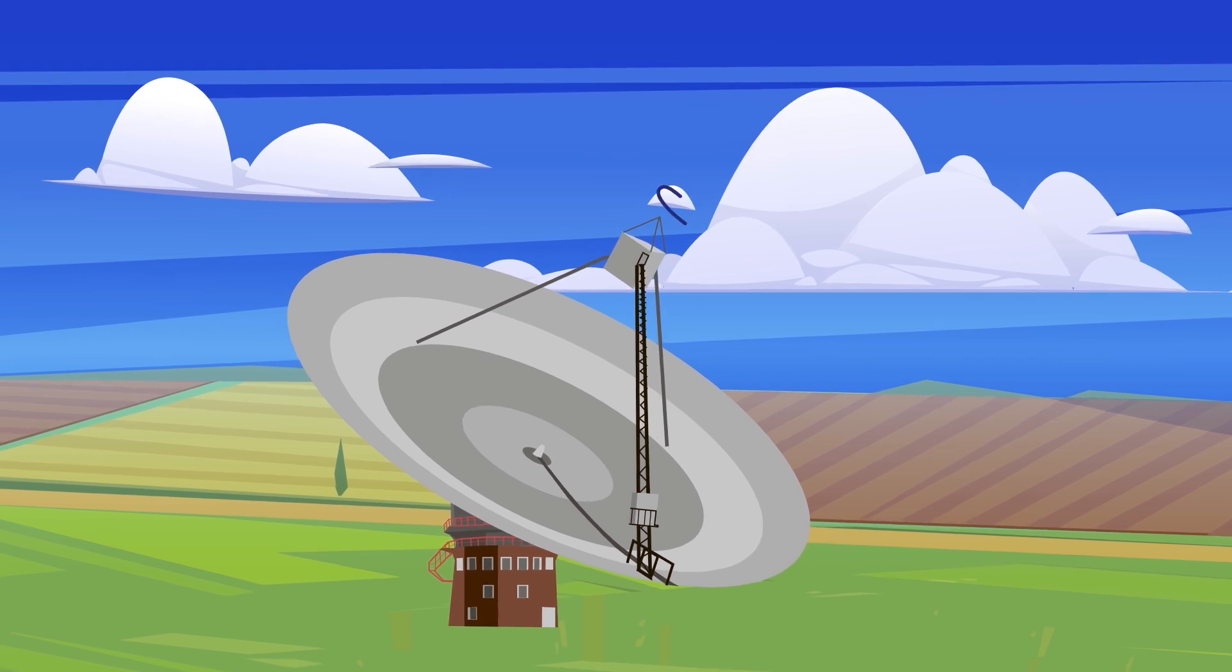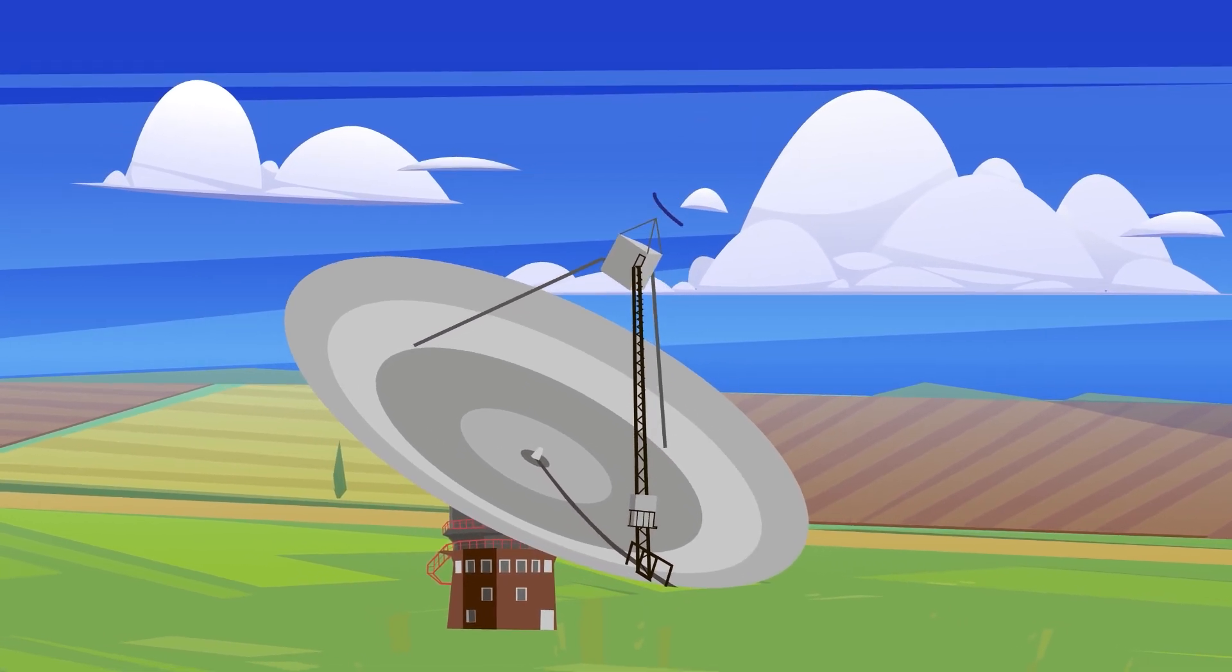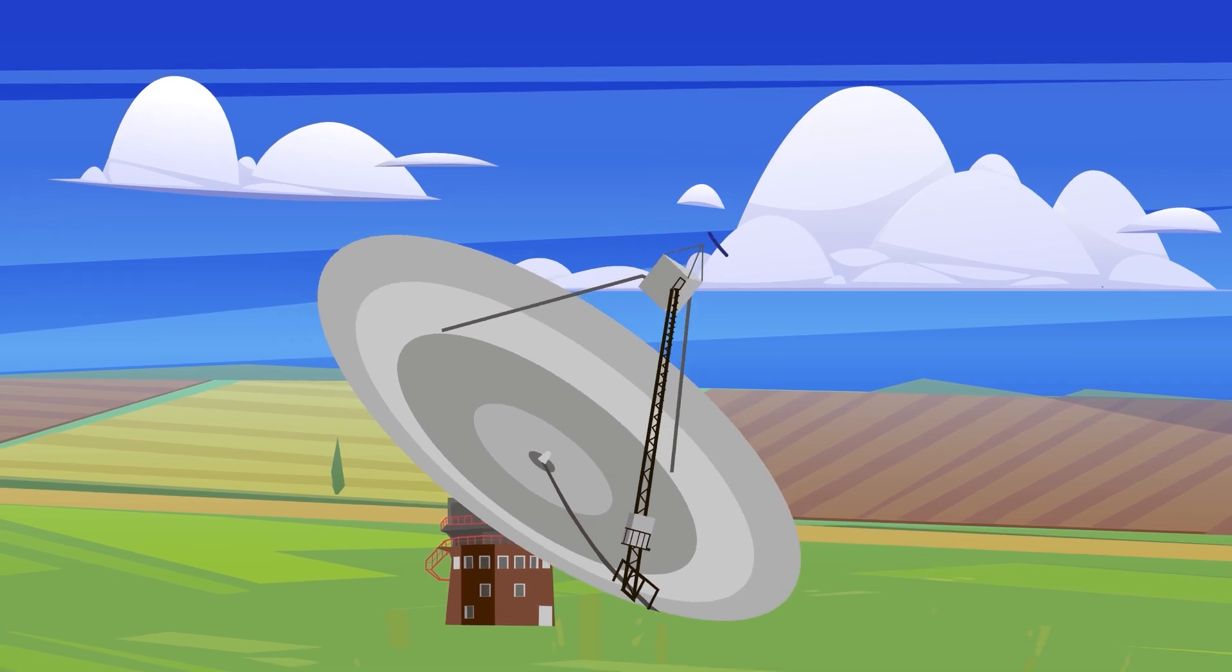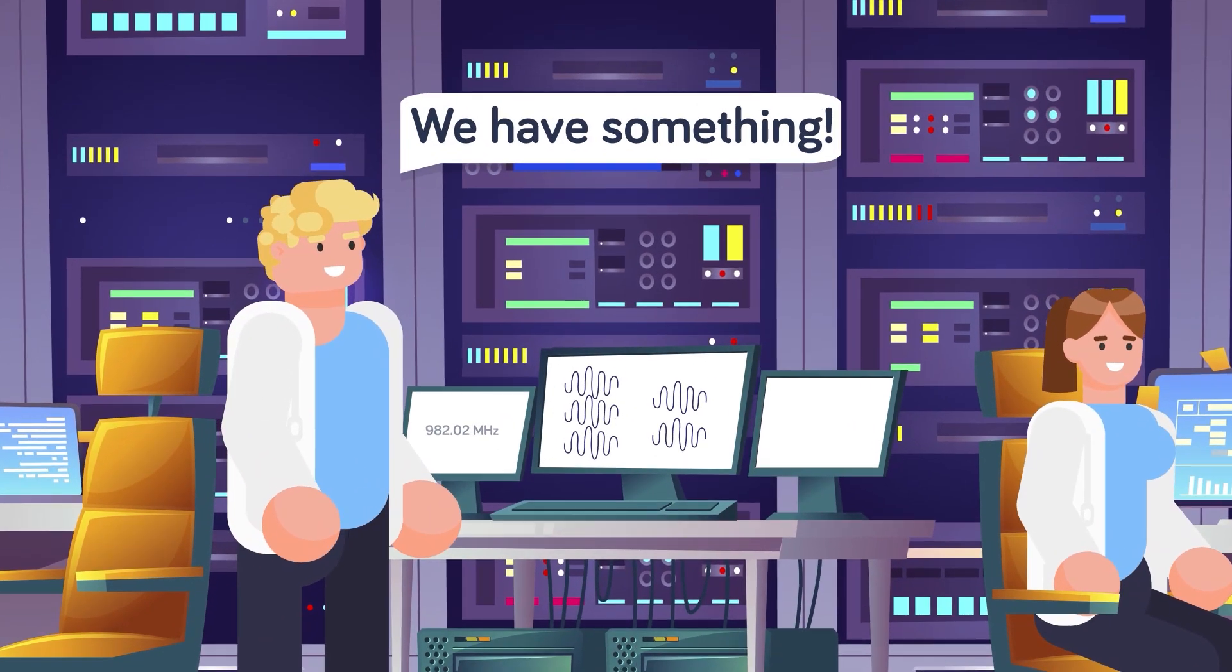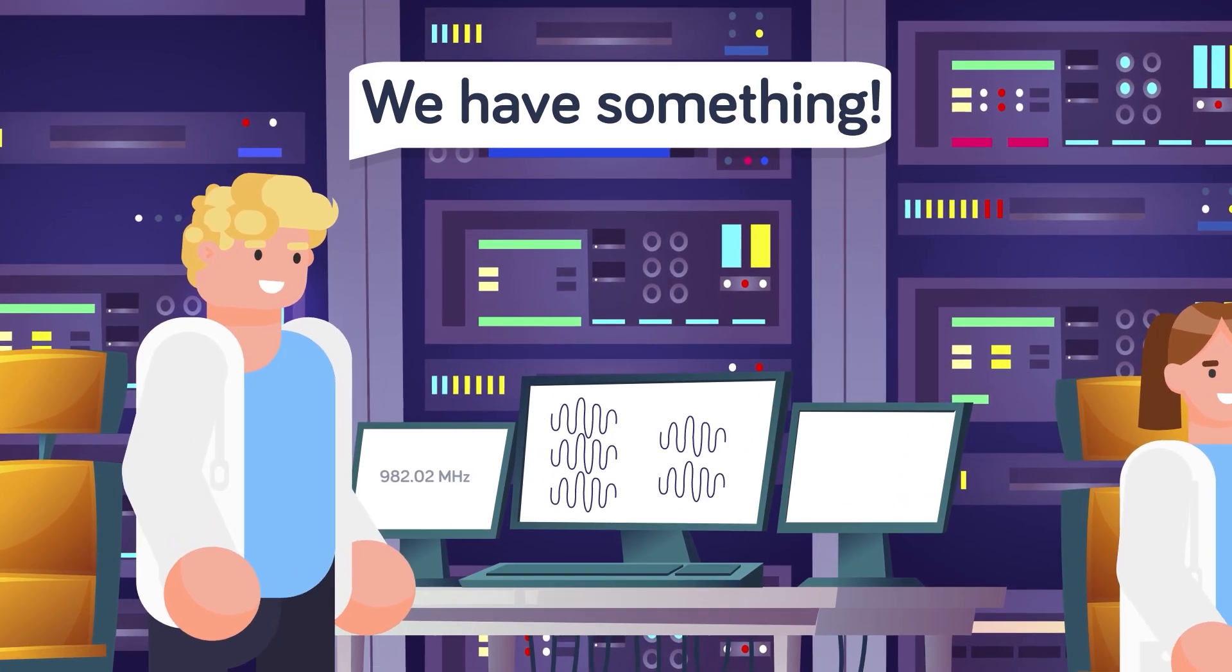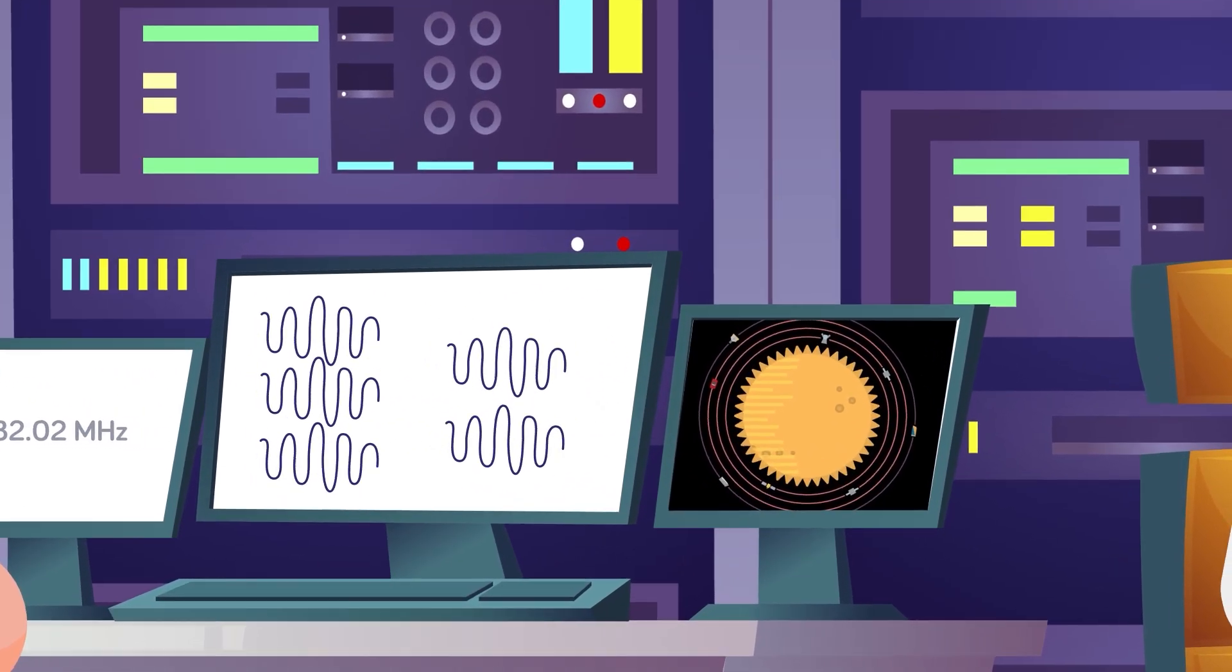Scanning Proxima Centauri for signs of solar flares, the Parkes radio telescope recorded something altogether different. Buried amidst the radio noise being blasted out by the red dwarf was something unique, a single narrowband transmission at a frequency of 982.02 megahertz. What's more, the signal repeated a total of five different times.